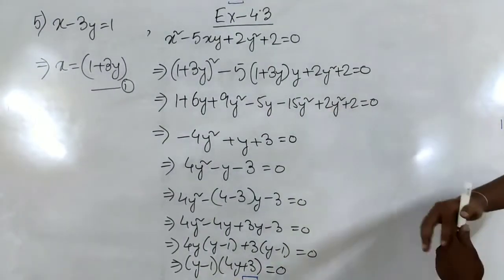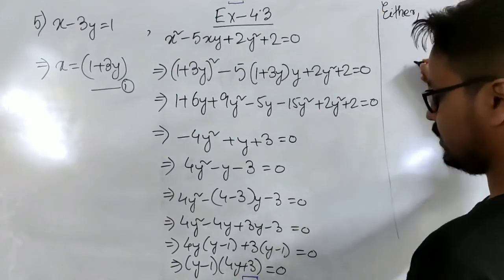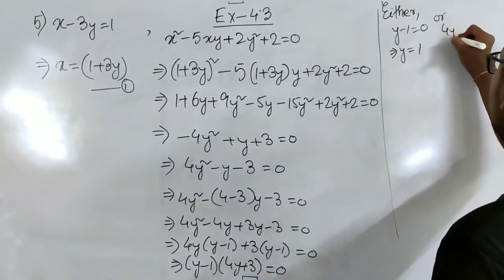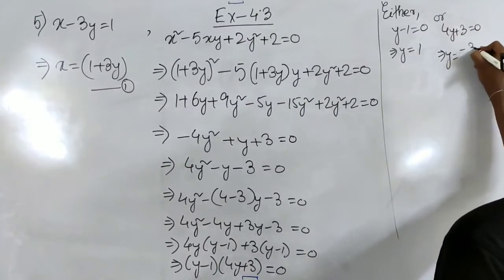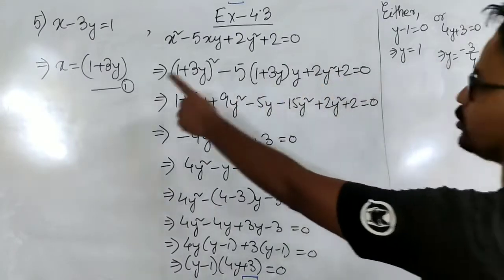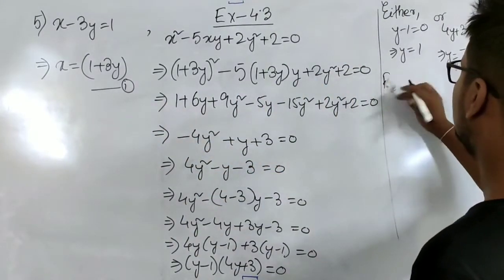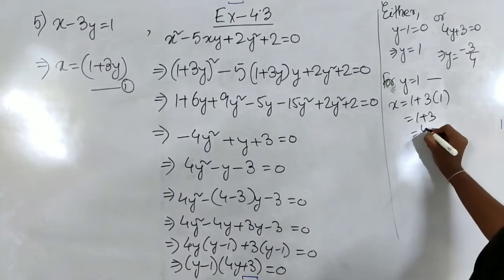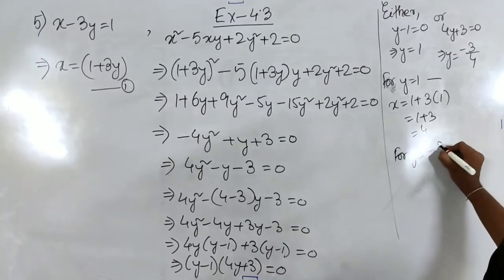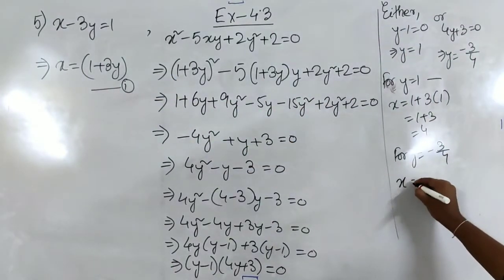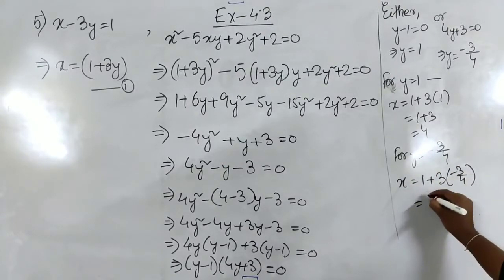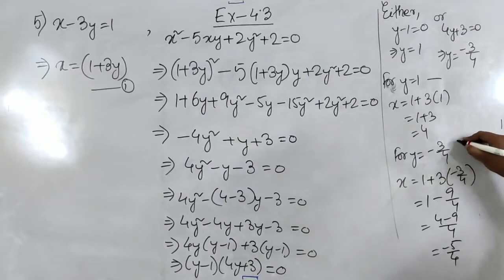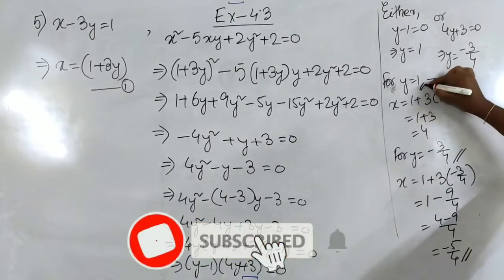Now that we have got 2 factors, either this is 0 or that is 0. So either y minus 1 equal to 0, giving y equal to 1, or 4y plus 3 equal to 0, giving y equal to minus 3/4. For y equal to 1, x is equal to 1 plus 3 times 1 which is 4. For y equal to minus 3/4, x is equal to 1 plus 3 times minus 3/4, which is 1 minus 9/4, that is minus 5/4.